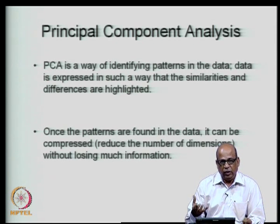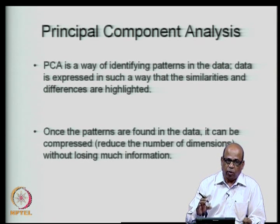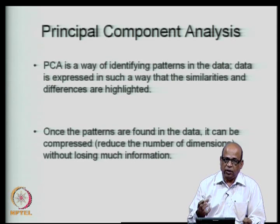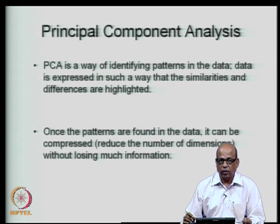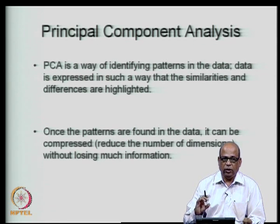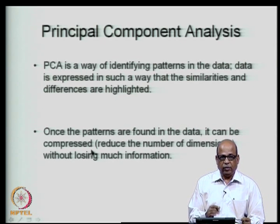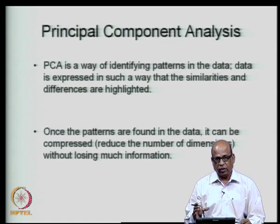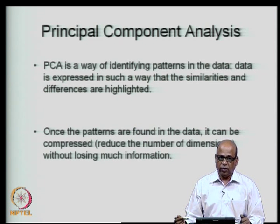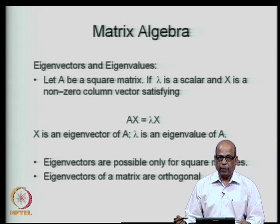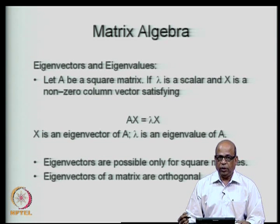Once the pattern is found in the data, the data can be compressed without losing too much information. Some components are much more predominant in their information content compared to others, and we can focus only on those predominant components. In fact, in image analysis, image compression uses principal component analysis in several situations. This will require some background in matrix algebra, so we will go through how to obtain eigenvectors and eigenvalues.